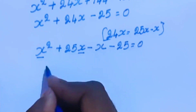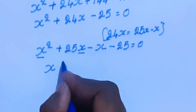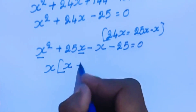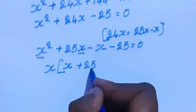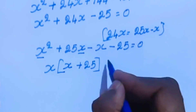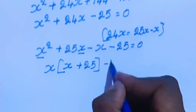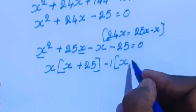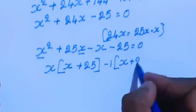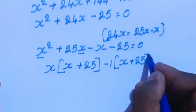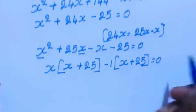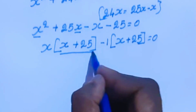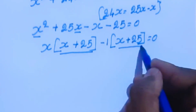Taking x common from the first two terms: x times (x plus 25), and from the last two terms: minus 1 times (x plus 25). So we take x plus 25 common, giving us (x plus 25)(x minus 1) equal to 0.